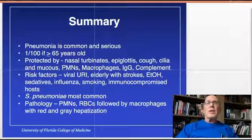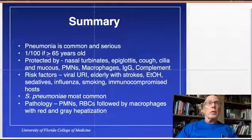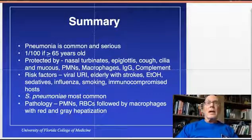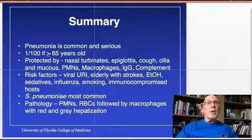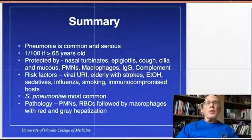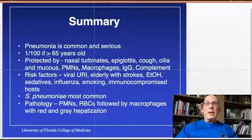To summarize: pneumonia is common and potentially serious. The highest incidence is in those 65 or older, at 1 per 100. Protective mechanisms include nasal turbinates, epiglottis, cough, cilia, and mucus produced by bronchioepithelial cells. Predisposing factors include viral URIs, being elderly (particularly after a stroke), heavy alcohol use, other sedatives, influenza, smoking, and immunocompromising illnesses. Streptococcus pneumoniae is the most common pathogen. When it enters the alveoli, it induces edema fluid acutely, with infiltration of neutrophils and red cells, followed by macrophages resulting in red then gray hepatization. In our next video, we will discuss the clinical presentation of pneumonia.